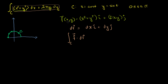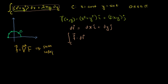Now we still want to ask ourselves: is this a conservative field, or does it have a potential? Is f equal to the gradient of some scalar function capital F? We saw in the last video that it is. Because if this is true, we can't just say it's a closed loop and equals 0 — but we do know the integral is path-independent.